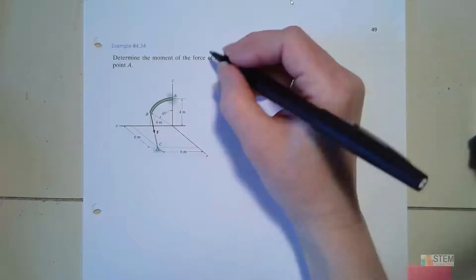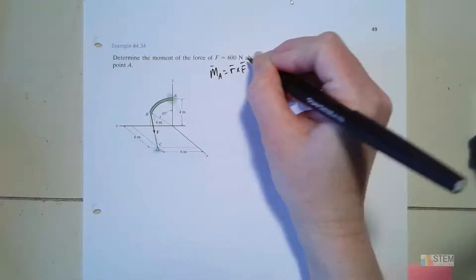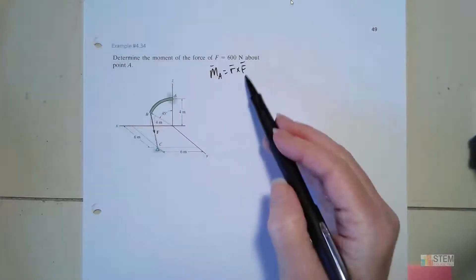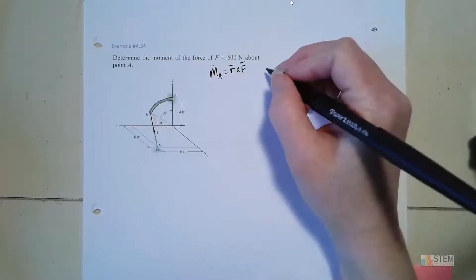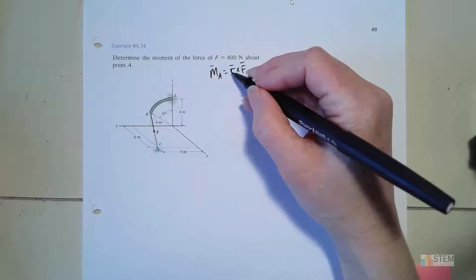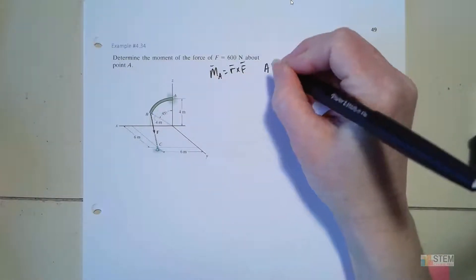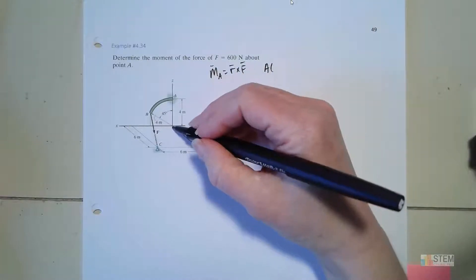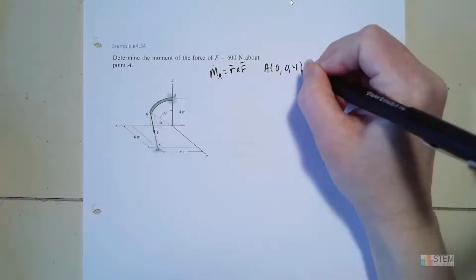We want to find the moment of this force about point A. Our equation for a moment is R cross F. I always use vectors for the 3D problems because I think it's easier, and we need to get R, our position vector, first. So let's write down our coordinates of these points. Point A is right here, on the z-axis, so that'll be (0, 0, 4).